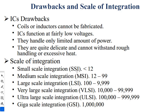Scale of integration: ICs were introduced with small scale integration — SSI — which had less than 12 components integrated into it. Medium scale integration MSI: 12 to 99 components. Large scale integration LSI: 100 to 9,999 components. VLSI — very large scale integration: 10,000 to 99,000 components. Ultra large scale integration ULSI, and finally giga scale integration, which had nearly 1 million components integrated inside the chip.